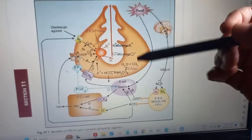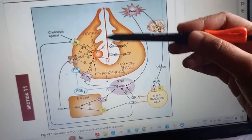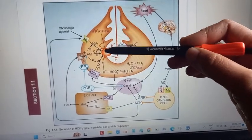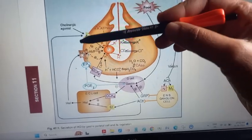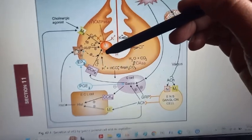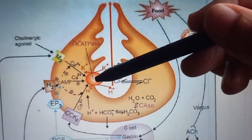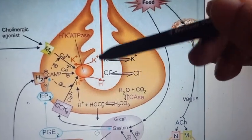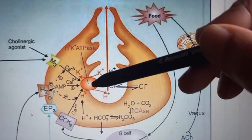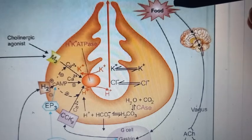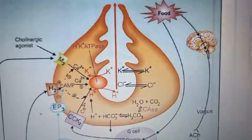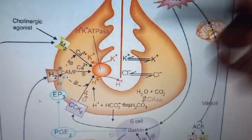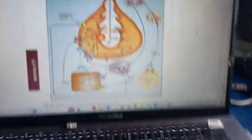Here you have the cell that is supposed to produce acid — see the H+. There is the proton pump, which is the H+/K+ ATPase enzyme. Omeprazole acts on this enzyme, which is the last step for producing acid. The H+ comes out only through this pump. Omeprazole inhibits this proton pump — proton meaning H+ — so H+ will not be able to come out.